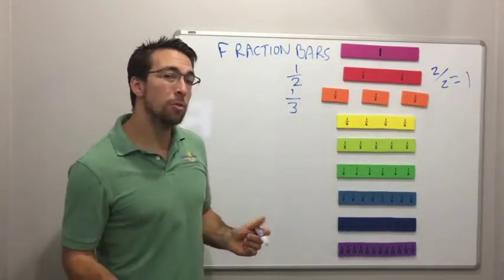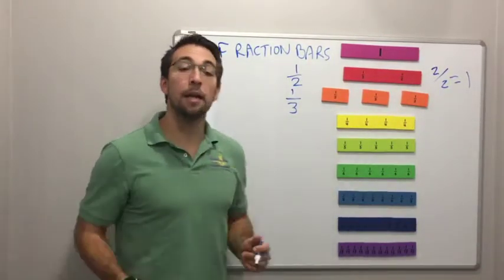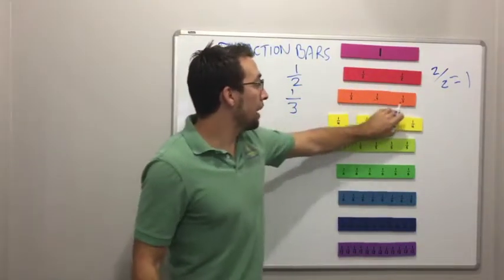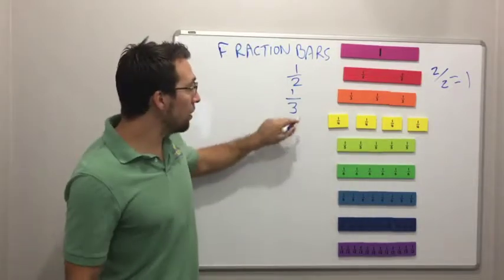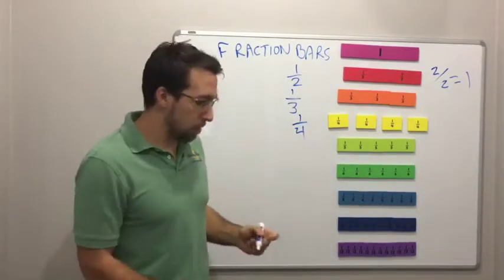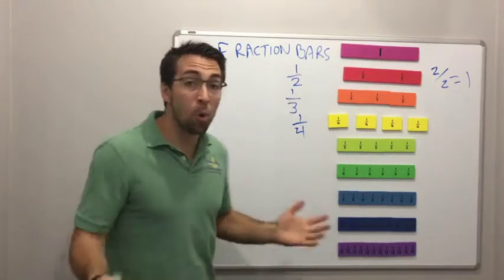Fraction bars are really cool because it's a very simple way that you can look at fractions and compare fractions. We have quarters. One out of four. That's a quarter. So think about money. How many quarters equals a dollar?